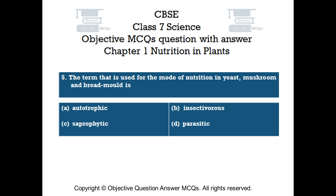Question number 5. The term used for the mode of nutrition in yeast, mushroom and bread mold is: Option A: autotrophic. Option B: insectivorous. Option C: saprophytic. Option D: parasitic.